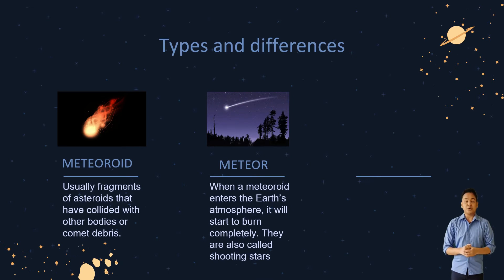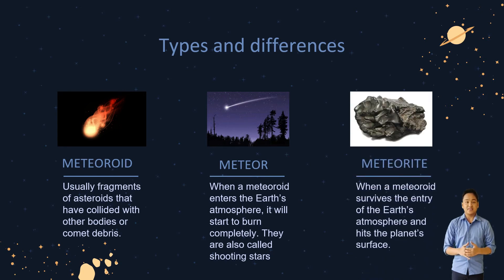When a meteoroid is large enough to survive the entry of our atmosphere, it will end up hitting our planet's surface. It is then known as a meteorite.